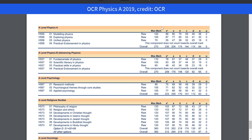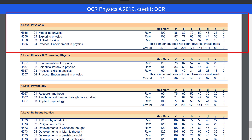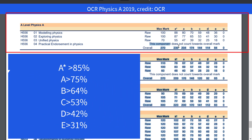The first exam board we'll be focusing on is OCR — let's start with OCR Physics A. All three papers — paper 1 Modelling Physics, paper 2 Exploring Physics, and paper 3 Unified Physics — have their separate grade boundaries, but this video will focus on the overall grade. In 2019, an A star required 230 out of 270, which equates to 85%. An A was above 75%, B was 64%, C was 53%, D was 42%, and E was above 31%.